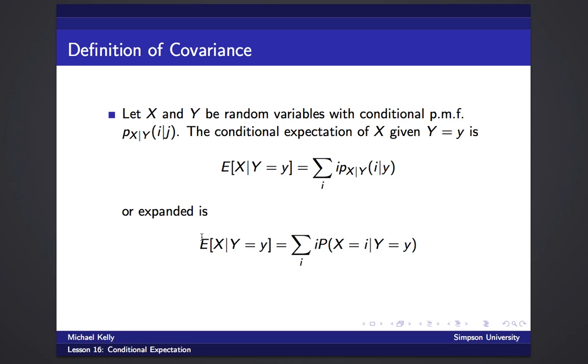Or if you wanted to expand that out without using the probability mass function it would look like this. The expected value of x knowing y is little y is the sum over all i's of i times the probability x equals i conditioned on y equals little y. So the only thing that's really changing here is this conditioning. If you got rid of this highlighted part you'd see it's the sum over i of i times the probability x equals i, which is just the regular expected value of x.